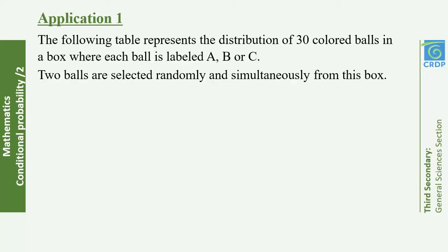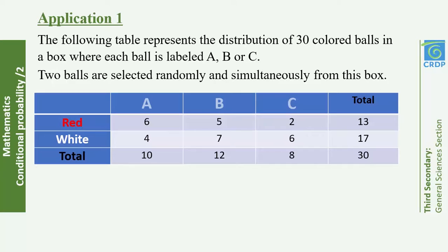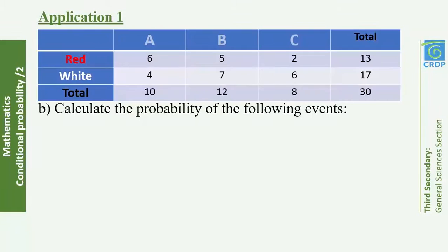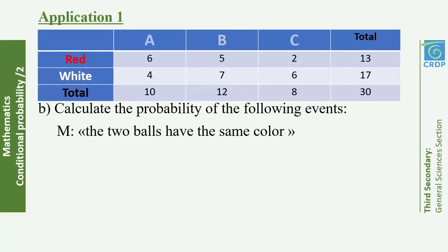Application 1: The following table represents the distribution of 30 colored balls in a box, where each ball is labeled A, B, or C. Two balls are selected randomly and simultaneously. Remember: the word 'simultaneously' means we use combinations. The total number of possible outcomes is C(30, 2) — choosing 2 balls from 30.